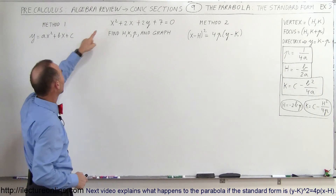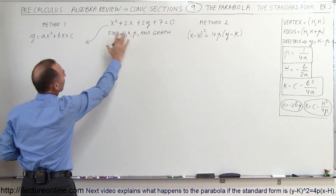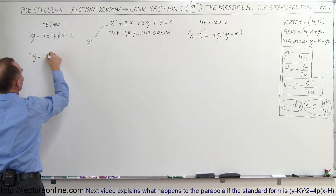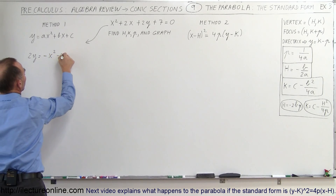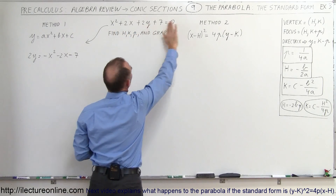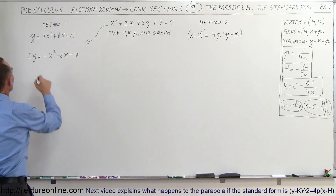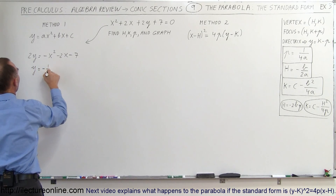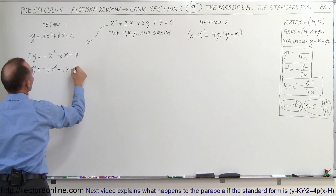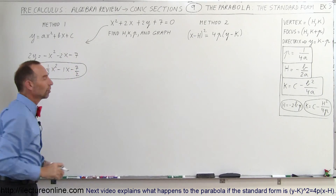First, we're going to take this equation and rewrite it with y on the left side and everything else on the right side. This becomes 2y equals minus x squared minus 2x minus 7. Now we divide both sides by 2 to get y equals minus one-half x squared minus 1x minus 7 over 2. That's the quadratic equation in the form y equals ax squared plus bx plus c.